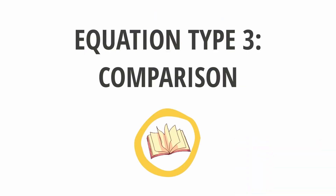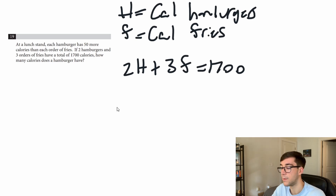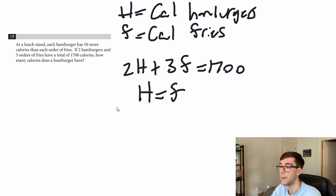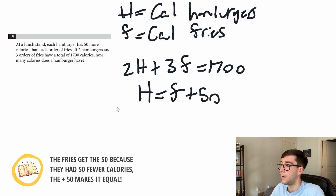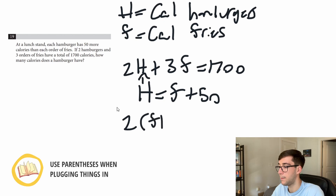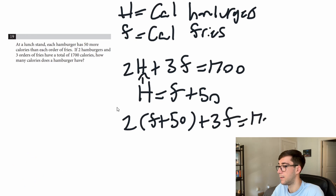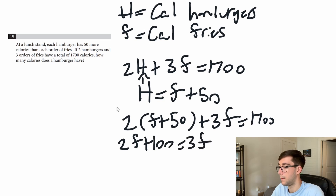This problem introduces a third type of equation: a comparison. The problem says each hamburger has 50 more calories than an order of fries. For comparison equations, start by setting them equal — h equals f — even though that's not true. Since the hamburger has 50 more, give the fries 50 more to balance: h equals f plus 50. Now plug that into the total equation: 2(f plus 50) plus 3f equals 1700, which gives 2f plus 100 plus 3f equals 1700, so 5f plus 100 equals 1700.